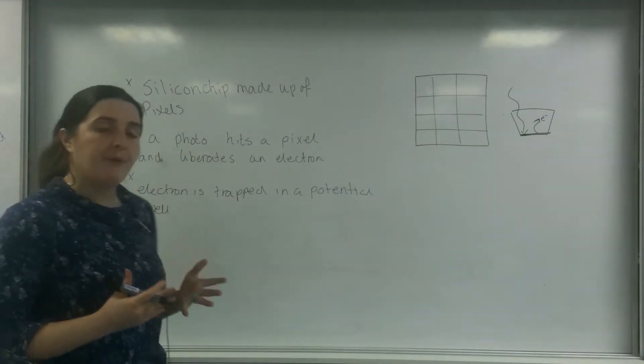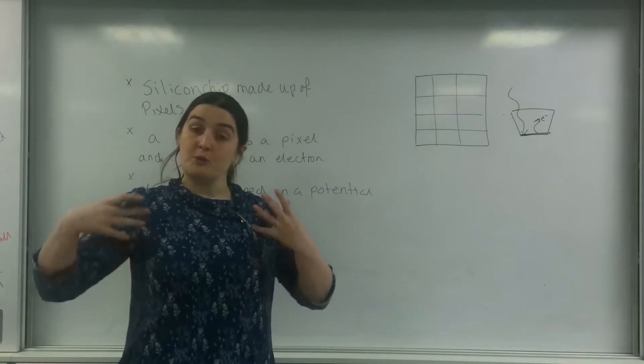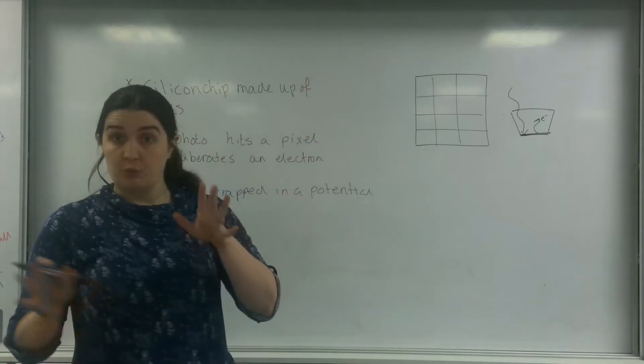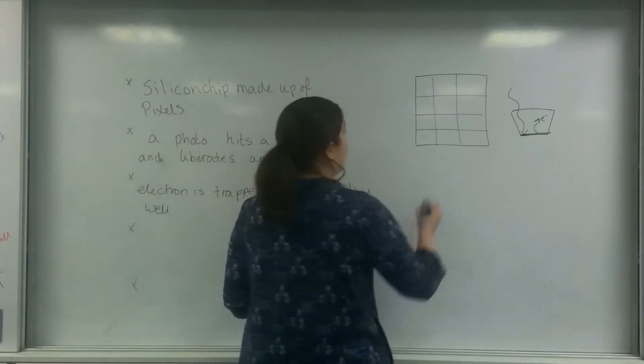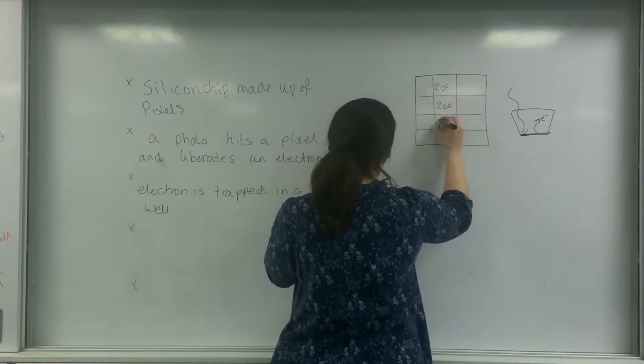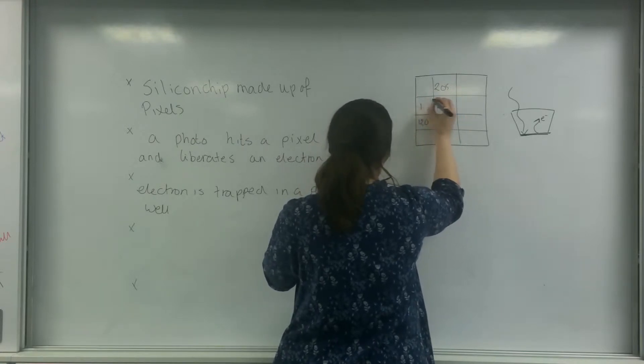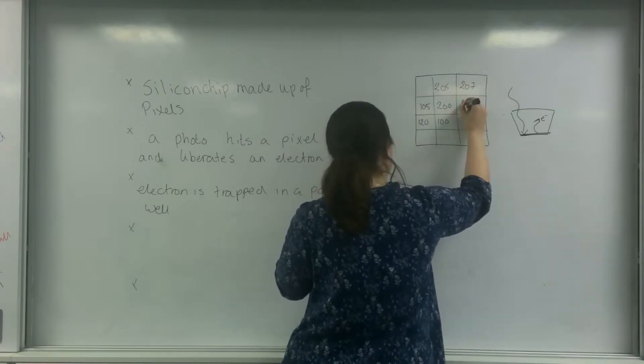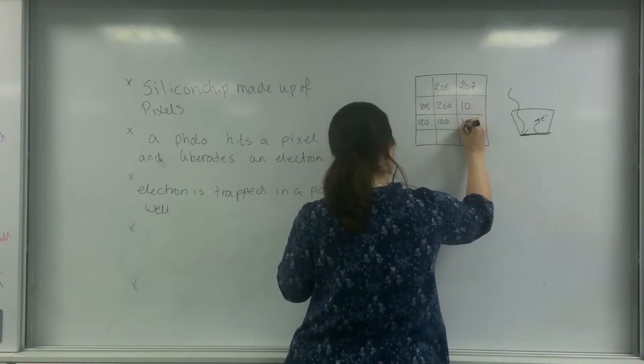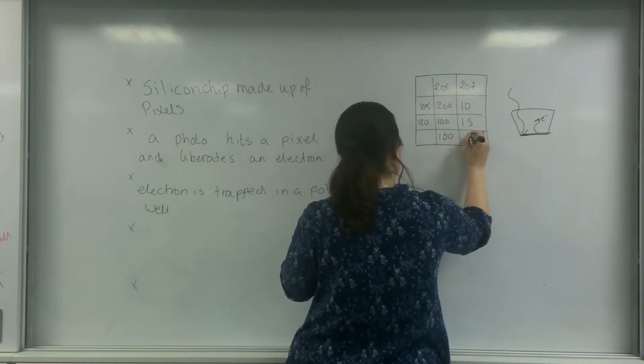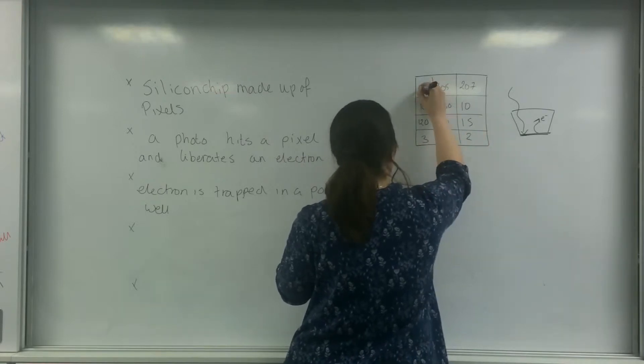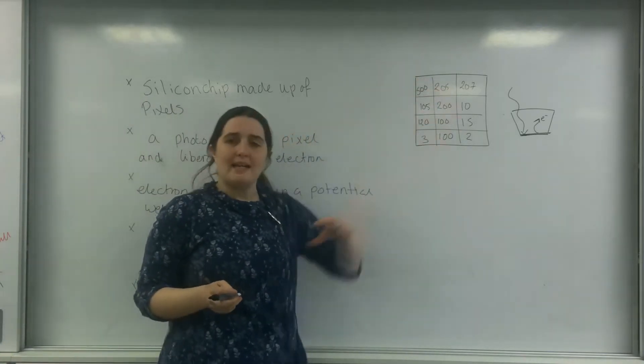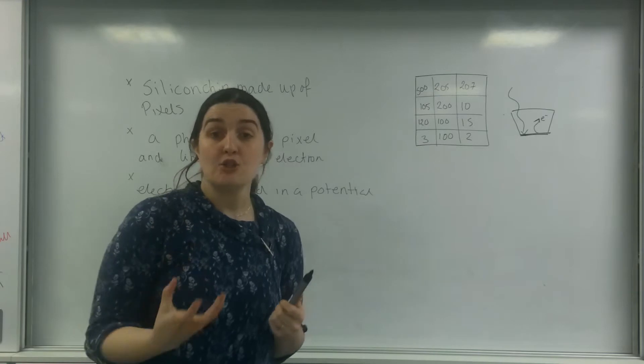Now what would happen is a number of photons would hit the pixel and a number of electrons would be liberated and stuck. My pixel would look like this. My whole silicon chip would look like this. So each one of these pixels has got that many electrons stuck in its potential well.